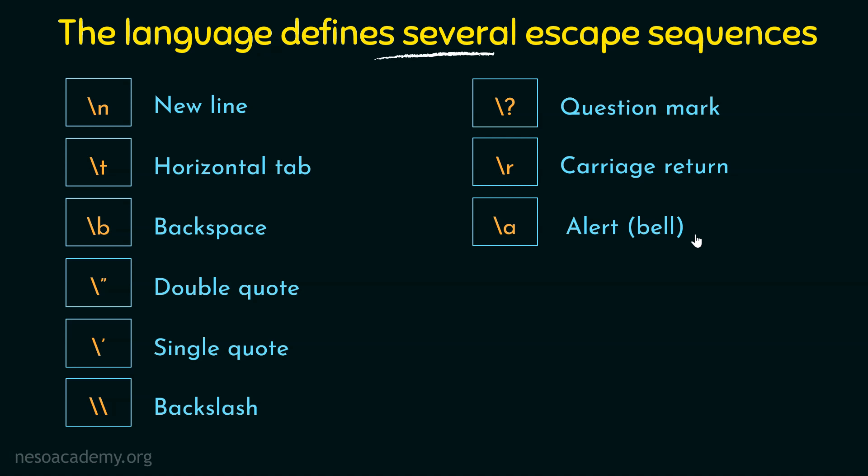These are some of the escape sequences defined by the C++ programming language. Now we will take an example where we will write a program making use of a few of the escape sequences we have seen, compile and run that program to see their working.